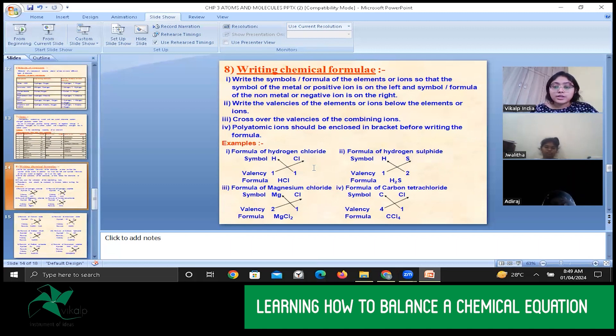HCl is the acid. You know, right? So, we are understanding how to write the formula. Write the valencies of the elements or ions below the elements or element or ions. So, you need to write it under it. Now, cross over the valencies of the combining ions. Now, we have to cross over because we have to denote this valency to the chlorine and this valency to hydrogen.